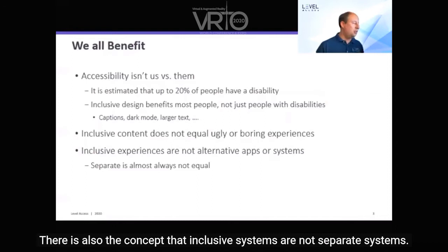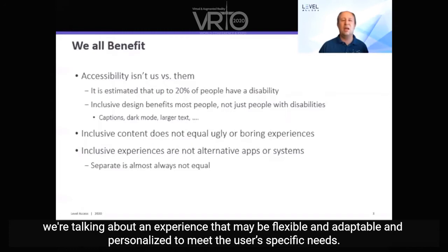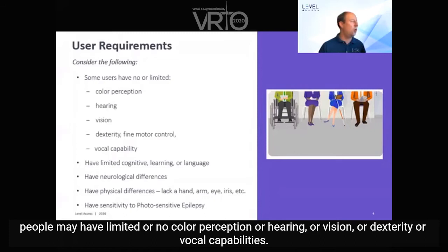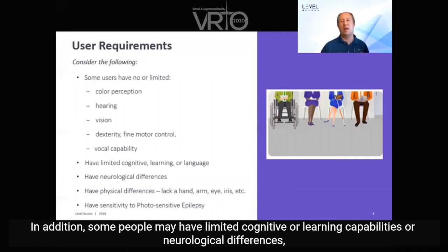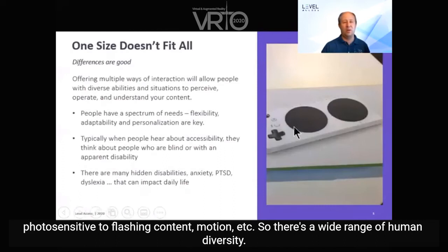There's also the concept that inclusive systems are not separate systems. We're not talking about creating a separate experience — we're talking about an experience that may be flexible, adaptable, and personalized to meet the user's specific needs. Consider the following when designing: people may have limited or no color perception, hearing, vision, dexterity, or vocal capabilities. In addition, some people may have limited cognitive or learning capabilities, neurological differences, or be photosensitive to flashing content or motion.